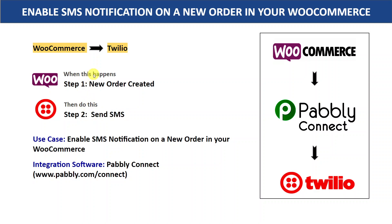In this video we are going to learn how you can enable or send SMS notifications to your customer every time a new order is placed in your WooCommerce website. I'm going to use the SMS application Twilio — you can use any other application like SMS Horizon or Autopilot. The minor problem is there is no direct connection between WooCommerce and Twilio, so we are going to integrate them using Pably Connect. This process requires no coding knowledge and any non-technical person can do it easily.